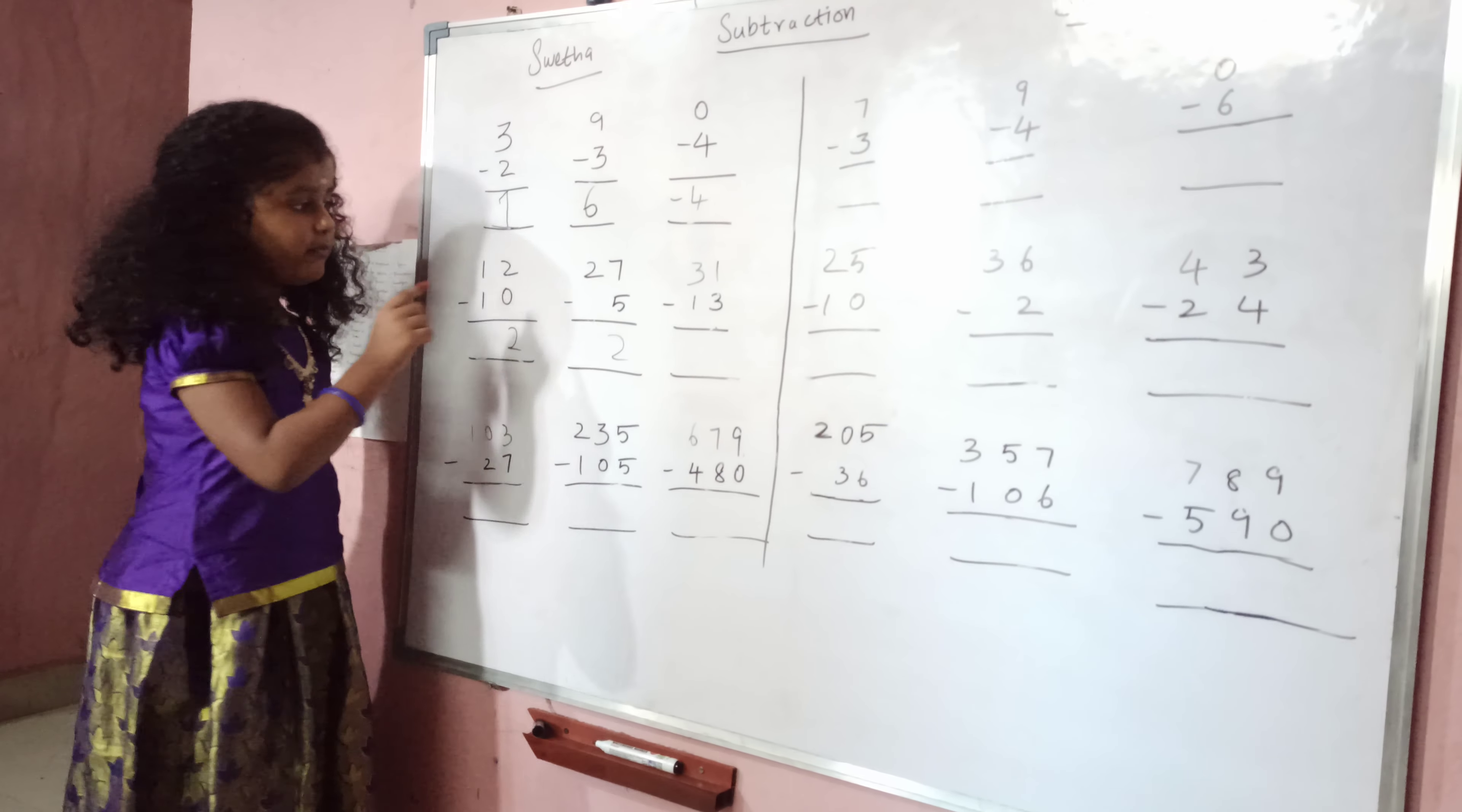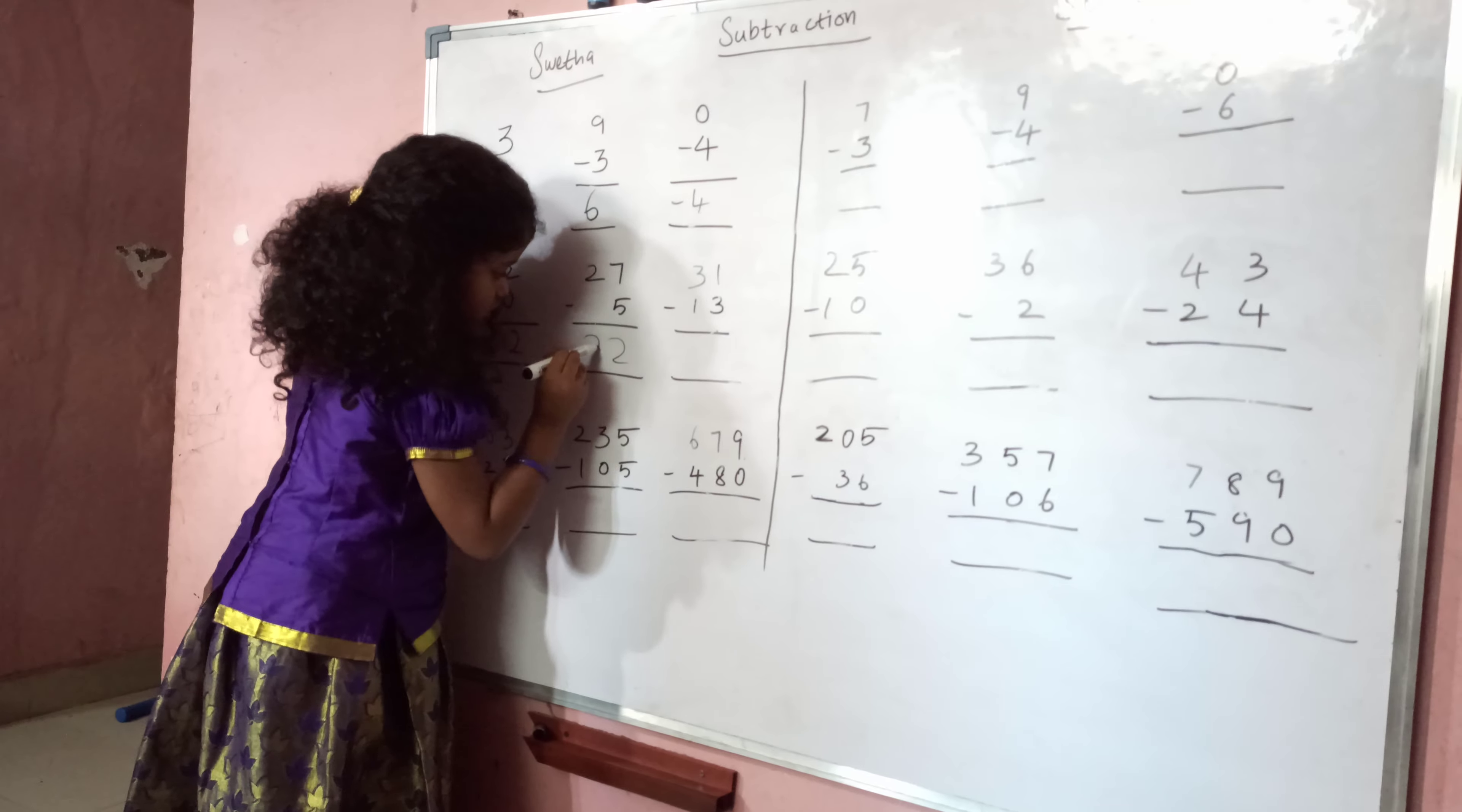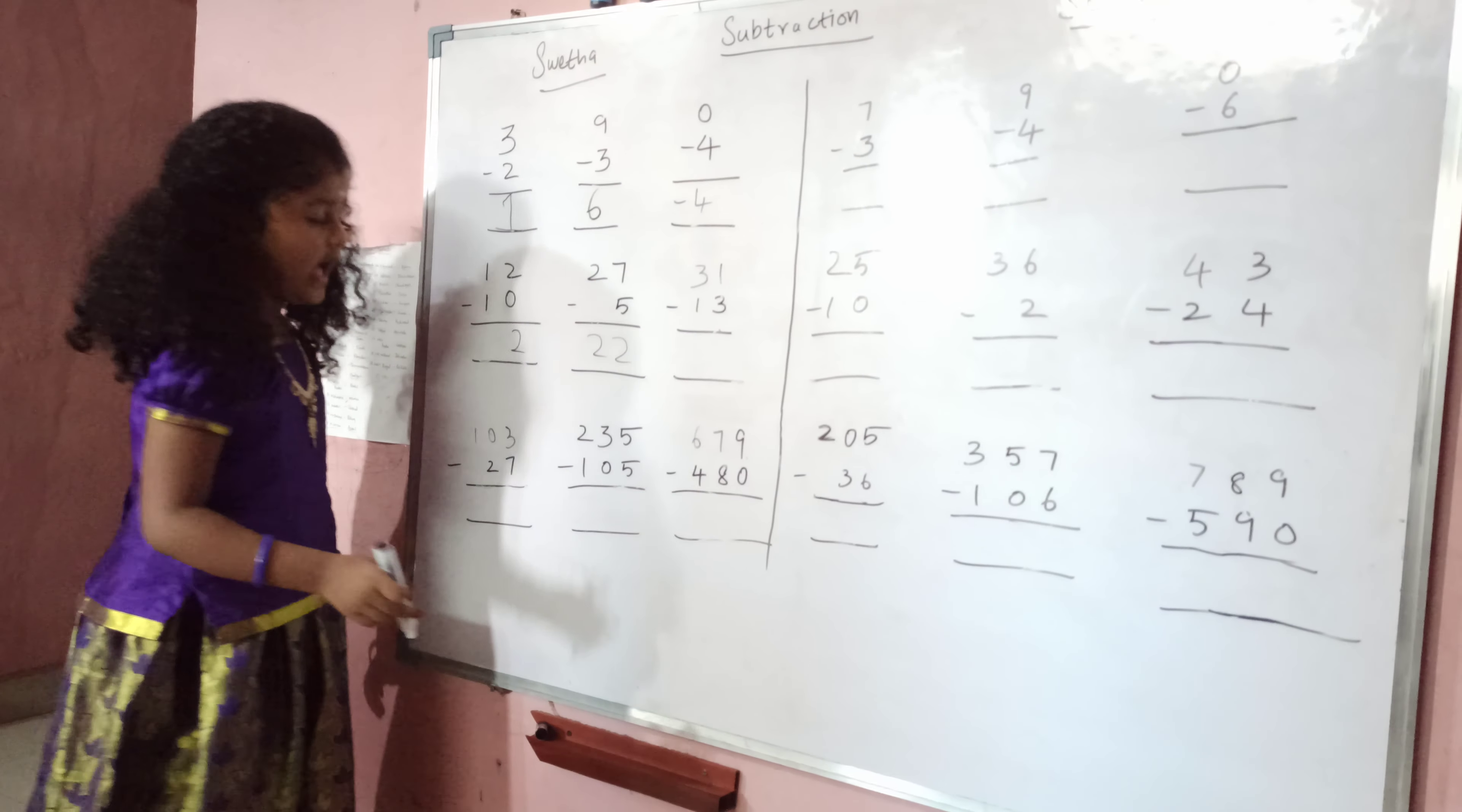Two minus zero is two. Twenty-two is the answer.